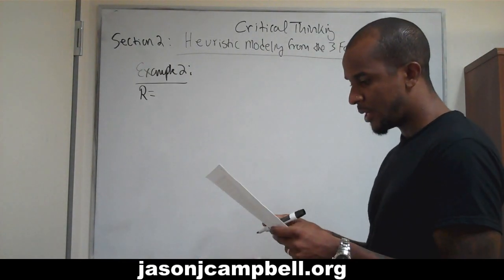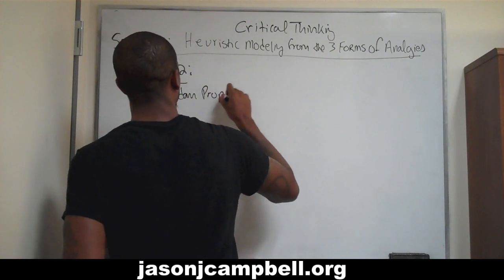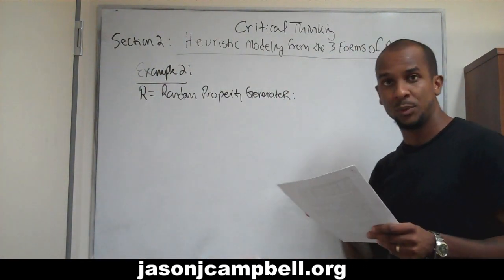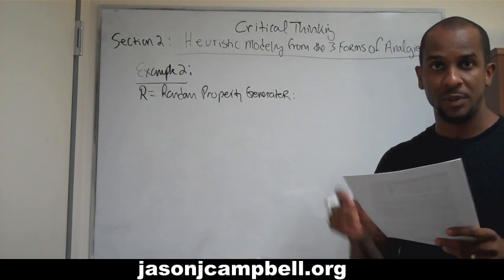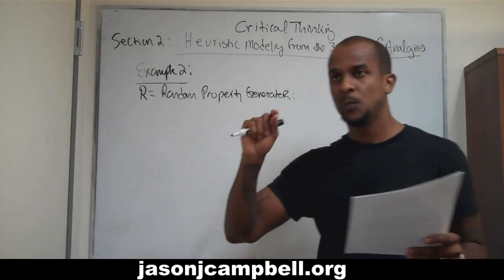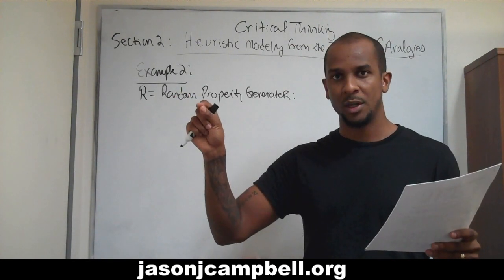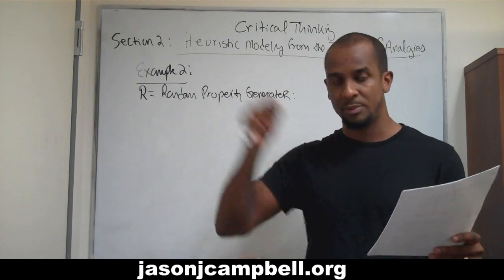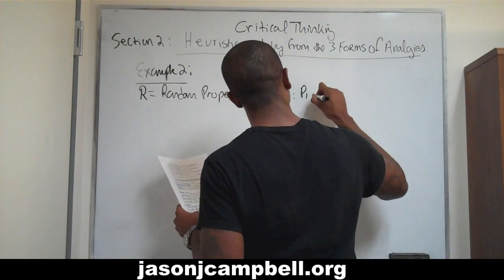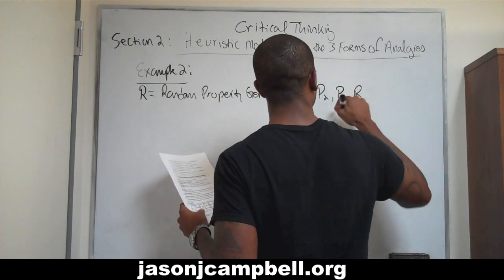The random property generator specifically, in this particular example, can generate properties P1, P2, P3, and itself — it can generate itself. So you can have a random property generator that generates P2, or one that generates P1, or one that generates another random property generator. In this example, it can generate P1, P2, P3, or it can regenerate itself, R.